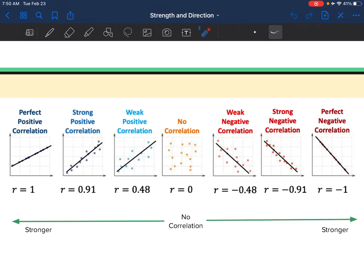So you want to look at the sign that tells you if it's positive or negative. And you want to look at the value. The closer it is to one, the stronger it is. The closer it is to zero, the weaker it is.